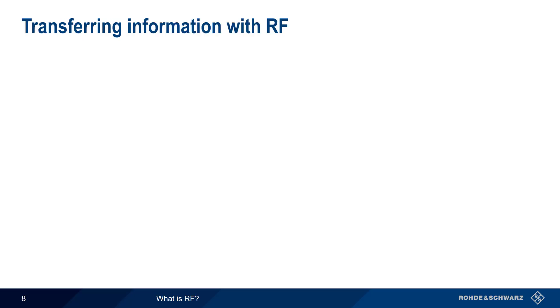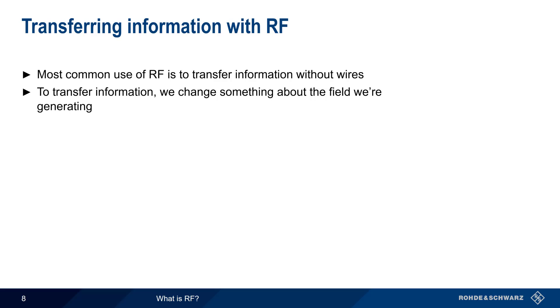But as mentioned earlier, the most common use of RF in the modern world is to transfer information without wires, or over the air. In order to transfer information using RF, we have to change one or more properties of the generated electromagnetic field, and this process is called modulation. The simplest way of changing something about our radiated field is just turning it on and off, and this is essentially how Morse code works. We turn the RF on for a short period of time when we want to send a dot, and we turn it on for a longer period of time when we want to send a dash.